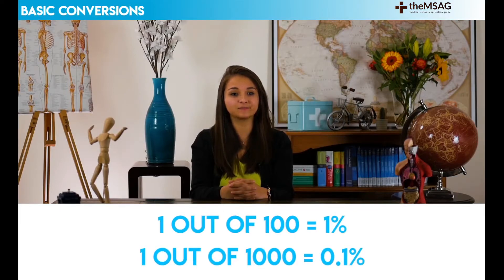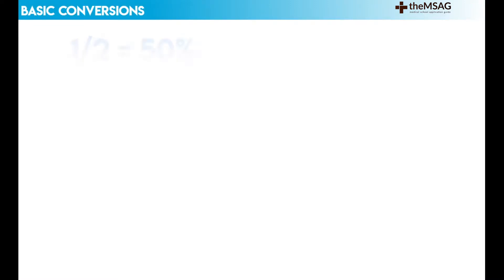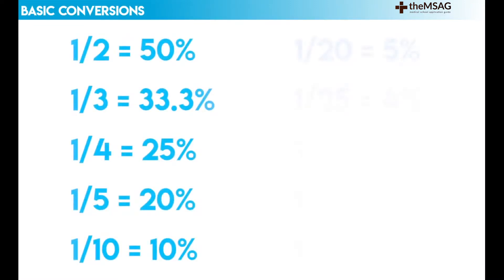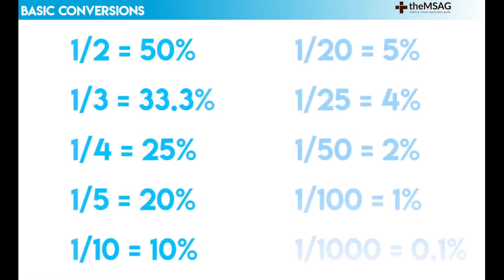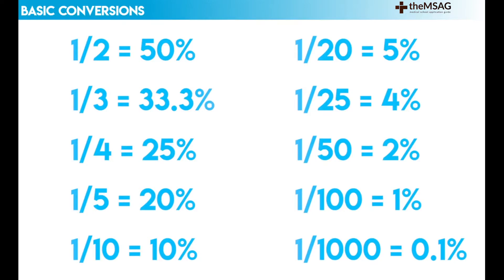The good news is that a relatively small range of fractions and percentages are covered in decision making, and they are mostly round numbers. The essential conversions are displayed on the screen now. The majority of the time, it will be these conversions that are directly being tested. Take the time to commit the essential conversions to memory — these are really basic and will save you a lot of time.